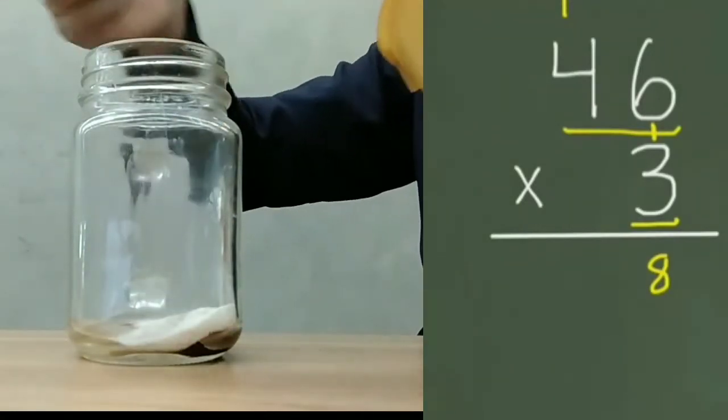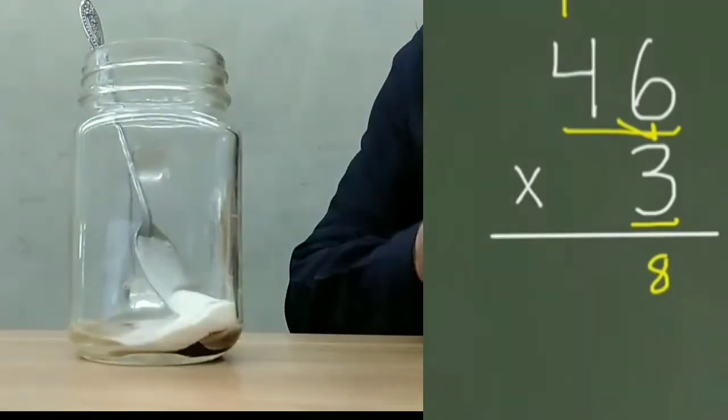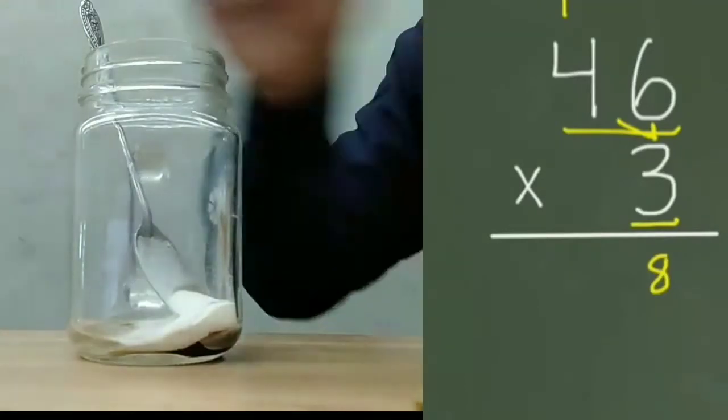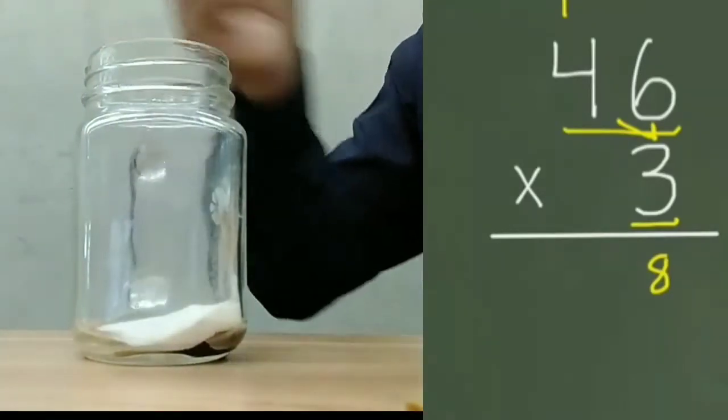Next, we multiply our 3 times 4. 3 times 4 is 12, plus we have that 1 extra 10, so we're going to have 13.